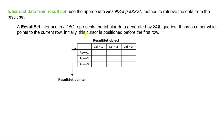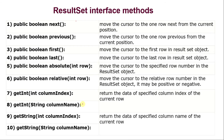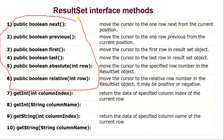The executeQuery method returns a cursor that initially points to before the first row. If you want to move across the rows, you can use the next method. The next method moves from the current row to the next row. To process all the rows, you can use a loop which will terminate when there are no more rows to process. Apart from the next method, the ResultSet interface also provides additional methods for cursor movement — to go forward or come backward.